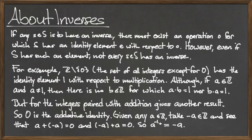Now consider the regular integers under the operation of addition. For the integers under addition, the element 0 is the identity element, which we call the additive identity. Given any integer a, we see that its opposite element, which we call negative a, is also an integer, and gives us the additive identity under the operation of addition. Thus, given any integer a, we say that negative a is its additive inverse under the operation of addition.